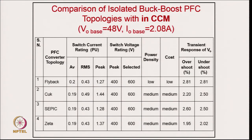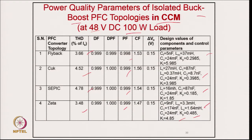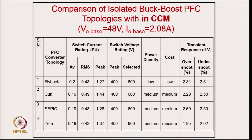A comparison of all four converters in CCM includes average current, RMS current, peak current, device voltage rating, device current rating, power density, and transient response — specifically undershoot and overshoot in the output voltage.